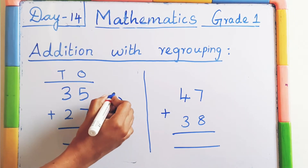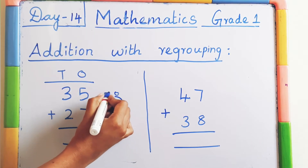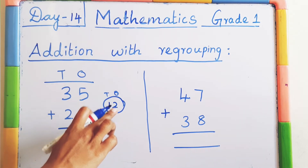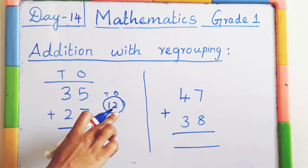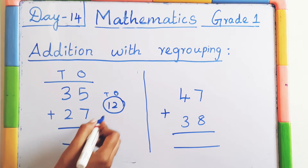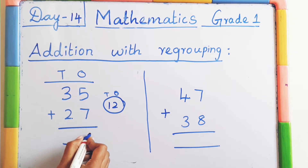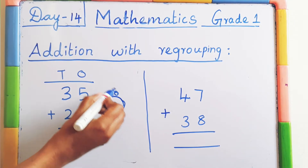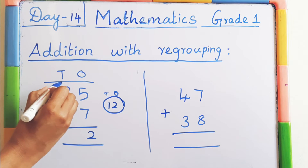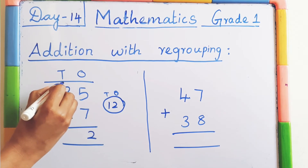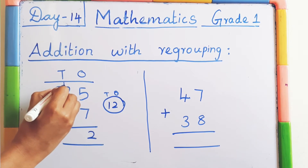Write the ones and tens for 12. The ones place has 2, so write 2 in the ones place. The 1 should be carried over to the tens place, so write that 1 here.